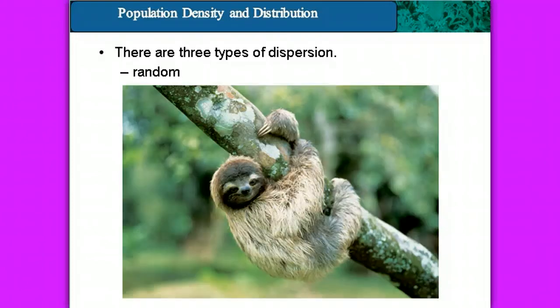In this example, we've got our tree sloth. The tree sloth — these guys are completely random. So when we try and find them in an ecosystem, you're going to find them wherever they are at any particular point in time.